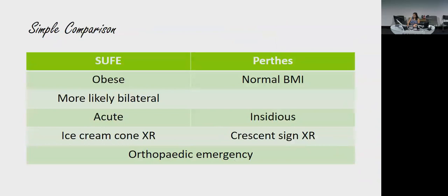A simple comparison for your MCQs: SCFE — obese, more likely bilateral, acute onset like an ice cream slipping off. Perthes — normal BMI, less likely bilateral, insidious ischemia progressing to necrosis of the femoral head. Both have specific X-ray signs and are orthopaedic emergencies requiring urgent referral to an orthopaedic surgeon.